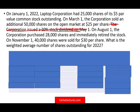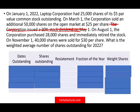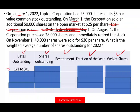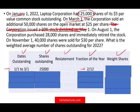The first thing you need to do is prepare this table. It has five columns: dates outstanding, shares outstanding, restatement, fraction of a year, and weighted shares. The first period runs from January 1st to March 1st. We started with 25,000 shares and there was no restatement. The fraction of the year is 2/12. So: 25,000 × 2/12 = 4,167 weighted average shares.